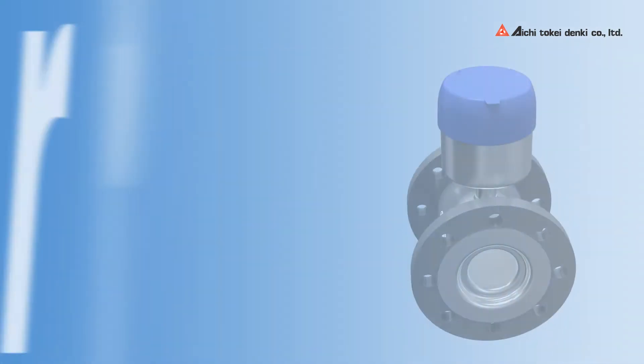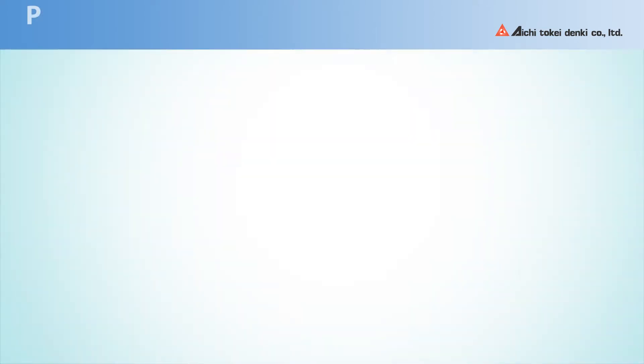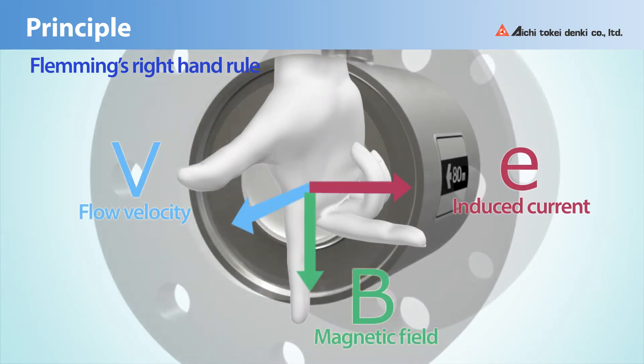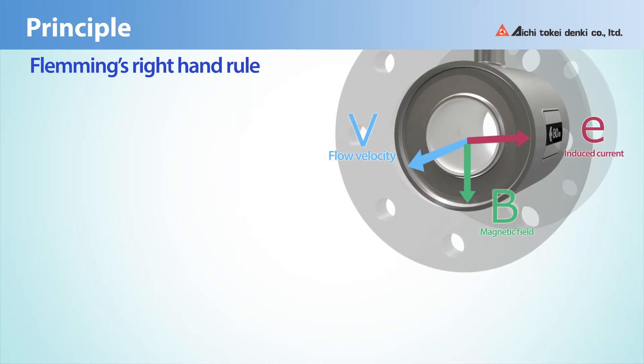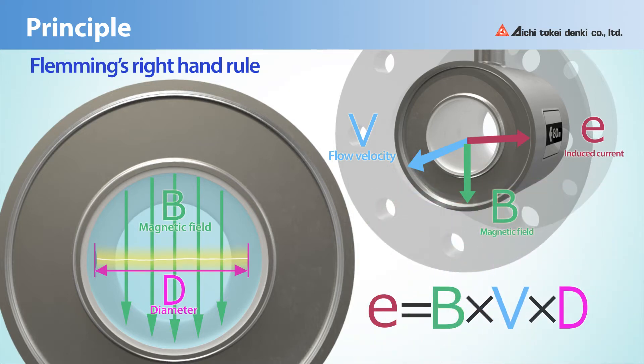The measurement principle of SU is Fleming's right-hand rule. The mechanism involves the magnetic field that is generated inside the meter. And as the water passes, some electric potential is generated in proportion to the water flow. Then the meter calculates the volume of water by catching the potential with its electrodes.